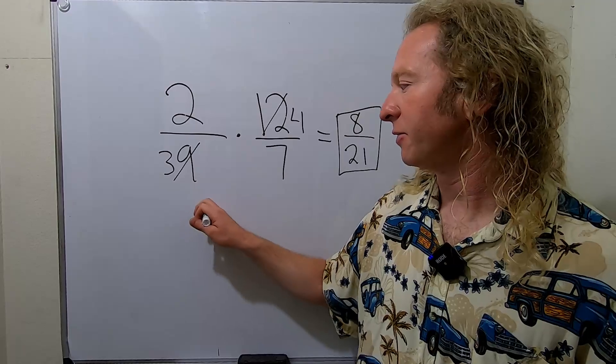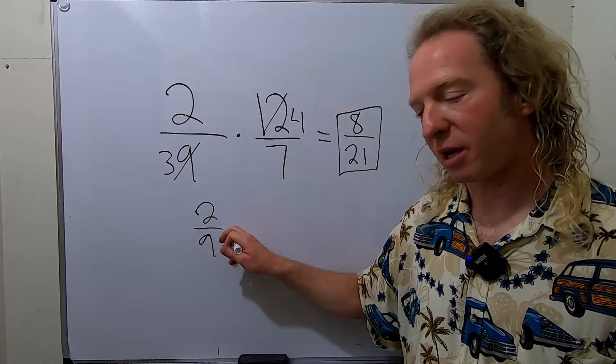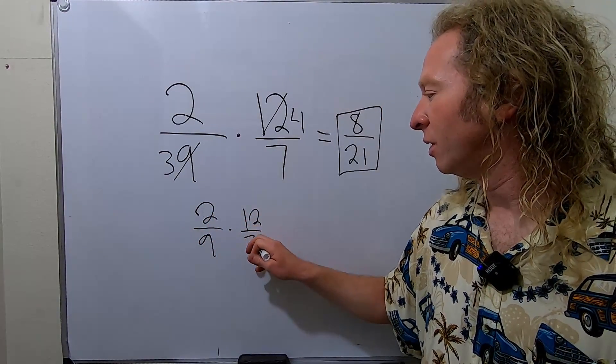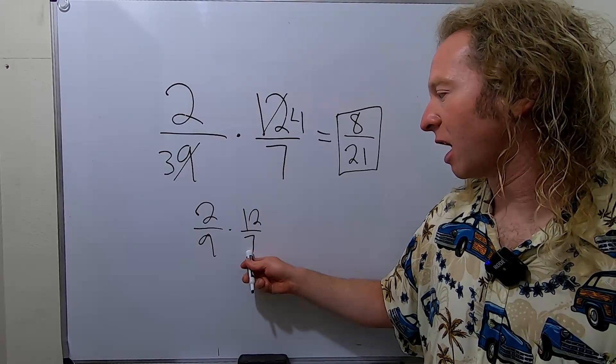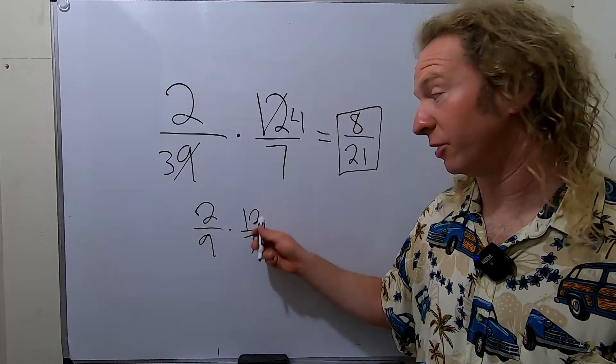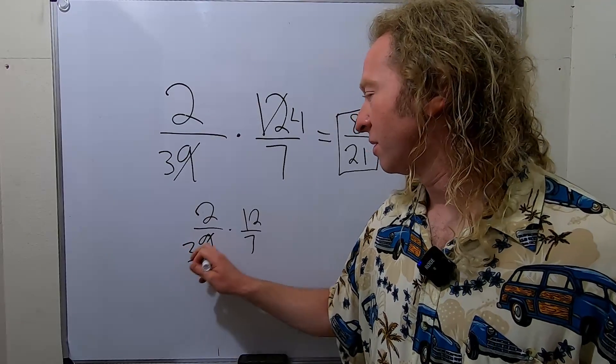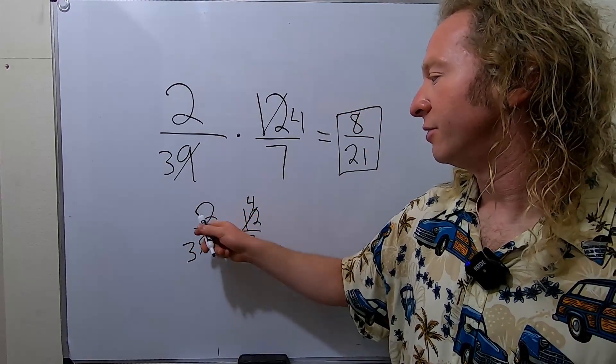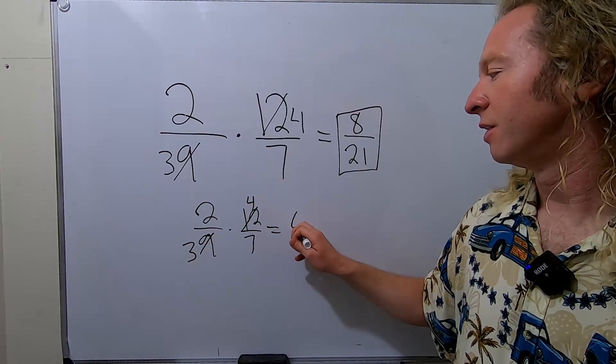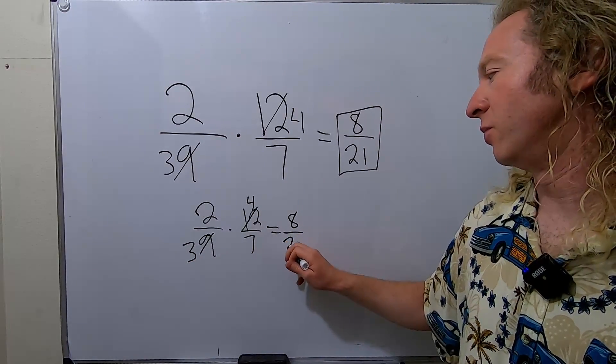So again, if you have 2 over 9 times 12 over 7, you look at these, nothing in common. You look at these, nothing in common. You look at these, nothing in common. But you look at these, 3 is in common. So this is 3. This is 4. 2 times 4 is equal to 8. 3 times 7 is equal to 21.